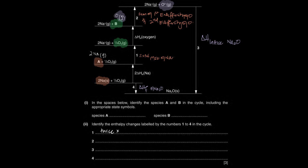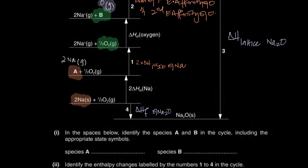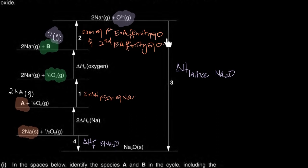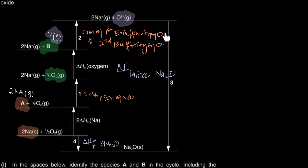Next, we need to calculate the value for the lattice enthalpy of sodium oxide. This reaction is the unknown. We've been given the other values — for example, the arrow for atomization of sodium is two times 107 kJ/mol. The first ionization energy of sodium from the data booklet is 494 kJ/mol. Atomization of oxygen is half the bond energy of oxygen.